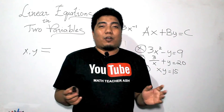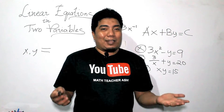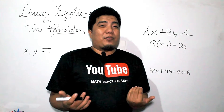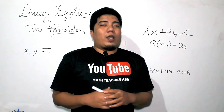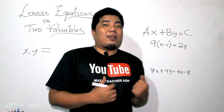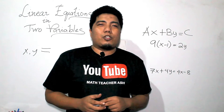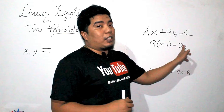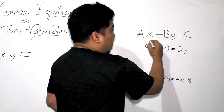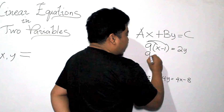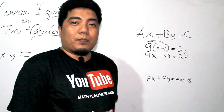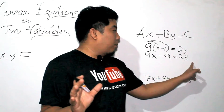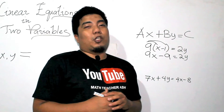Now let's have more examples on how to transform linear equations in two variables into standard form. For our final discussion, let's try to transform these given equations into standard form and identify whether these given equations are linear equations in two variables, as well as find the values of a, b, and c. For number one, we have nine times the quantity x minus one is equal to 2y. We distribute the nine to the quantity, giving us 9x minus 9 is equal to 2y. Now we have our x term, y term, and constant term — all parts of our linear equation in two variables.